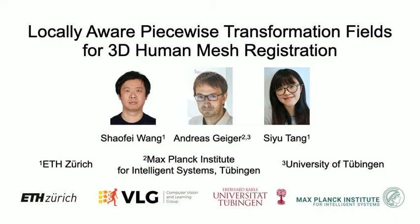We present a new approach that simultaneously conducts surface reconstruction and joint rotation estimation for human mesh registration from sparse point clouds of dressed humans. We use a set of piecewise functions that predict translational vector fields between the pose space and the canonical space of humans, which implicitly captures the joint rotations using local point cloud features. We term our approach locally aware piecewise transformation fields.